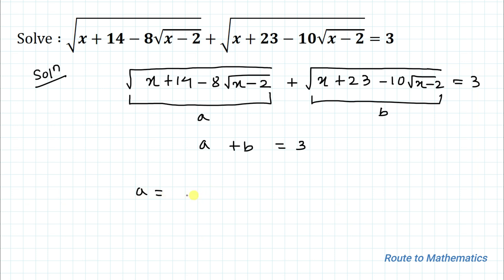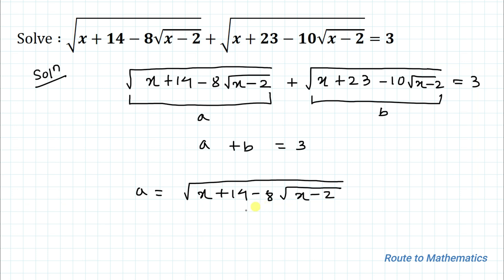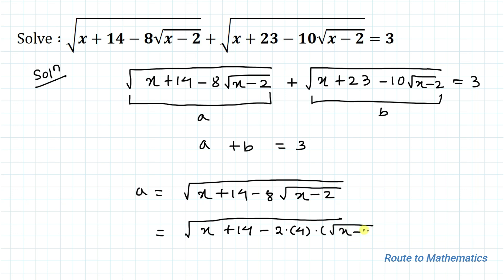We have taken a = √(x + 14 - 8√(x-2)). Our next step is to simplify this term so that solving the equation becomes a bit simpler. We are going to break the terms: x + 14 - 8 can be broken as 2 multiplied with 4 multiplied with √(x-2).